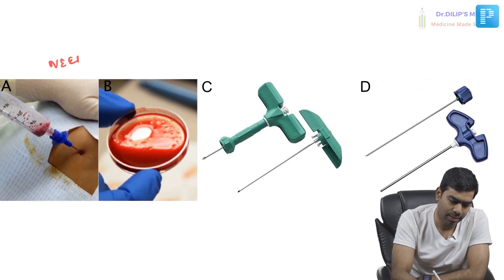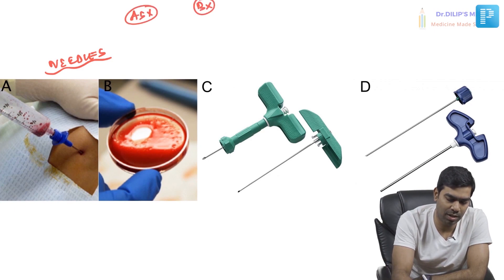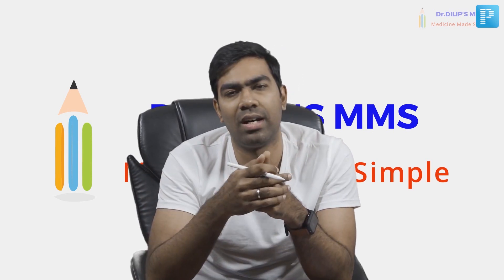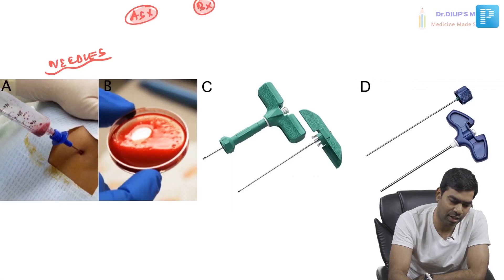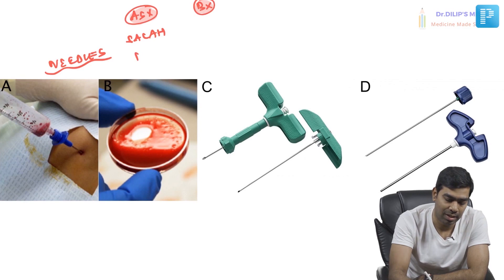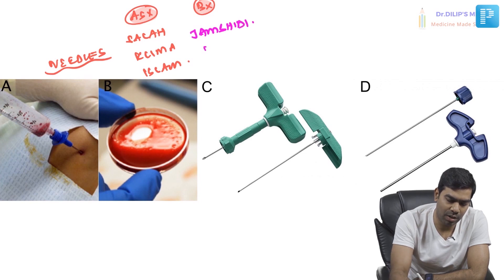Now for the needles used in bone marrow examination. There are aspiration needles and biopsy needles. Knowing the names of these needles is not very important currently because we are using only disposable needles. But for reference: classic aspiration needles include the Salah aspiration needle, Klima's needle, and Islam needle. Classic biopsy needles include the Jamshidi needle, Osgood needle, and Islam needle. Islam needles have two different types — one for aspiration and one for biopsy.